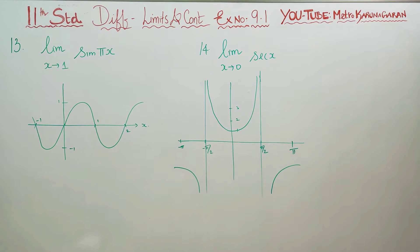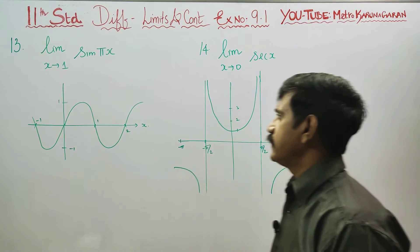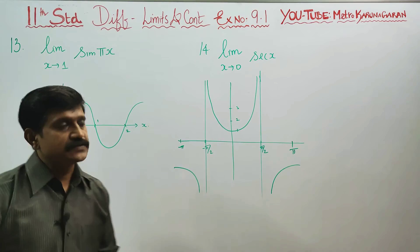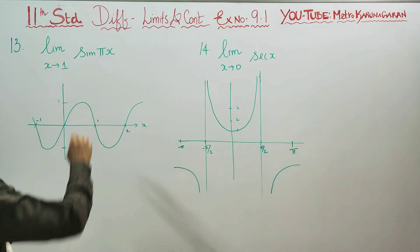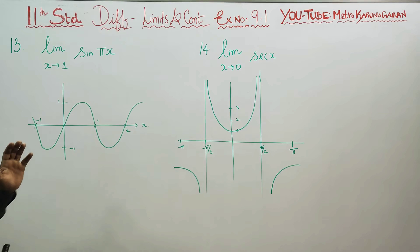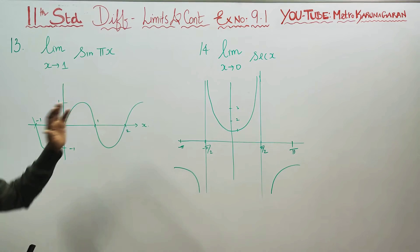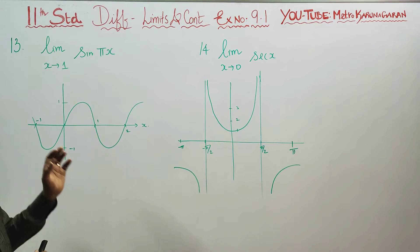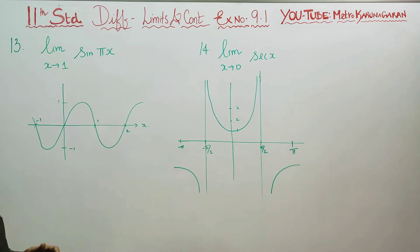Dear 11th standard students, in exercise number 9.1, sum number 13, using the graph, you have to find the limit as x turns to 1 of sin(πx) using the graph. If the limit exists, you have to write the answer for the limit. If the limit does not exist, you have to write the reason.